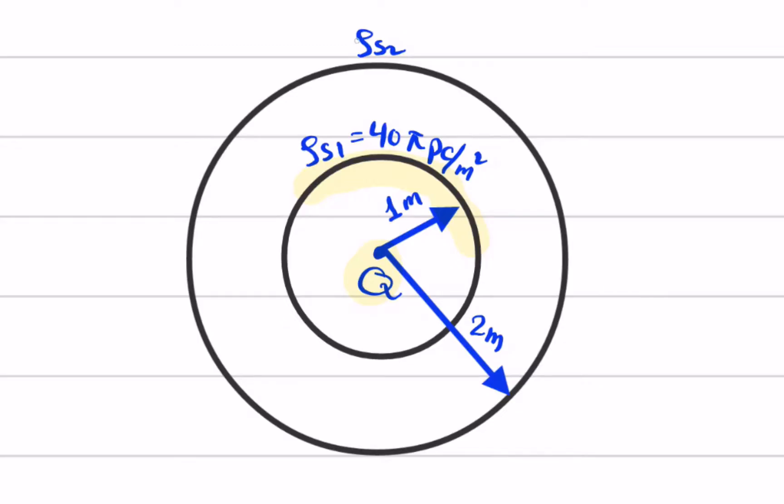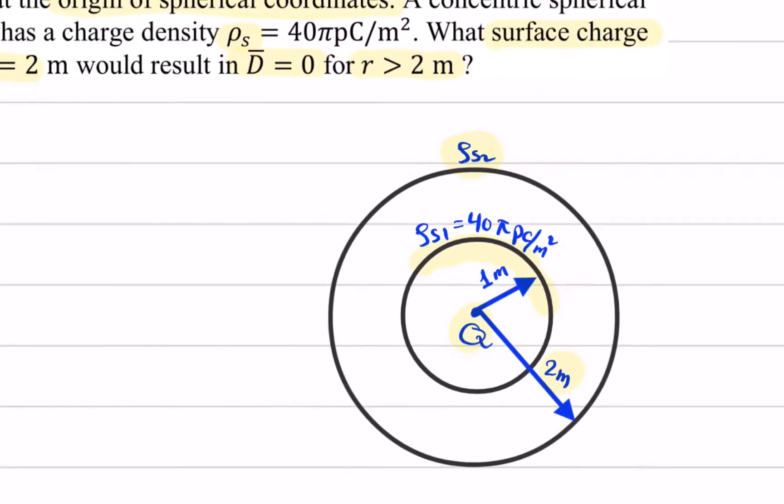We need to find the charge density ρ_s2 on the concentric shell at radius two meters such that D equals zero for r greater than two meters.